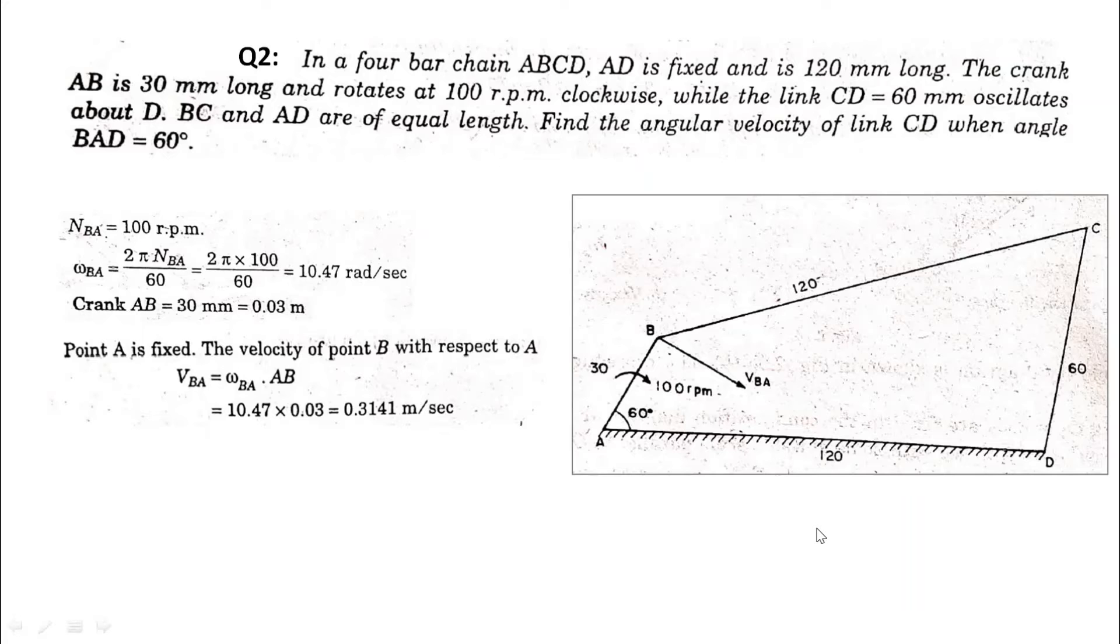So here we have given angular velocity 100 rpm. We will convert it to radians per second. So 2 pi times the rpms divided by 60. We will get radians per second. We have given dimensions in mm, we will convert it to meters.